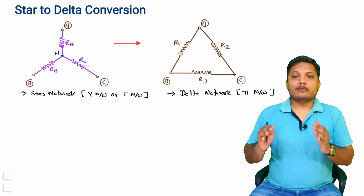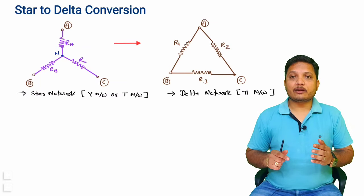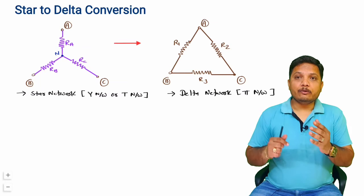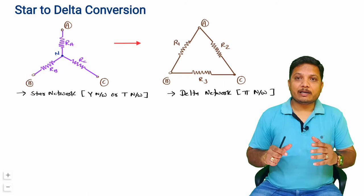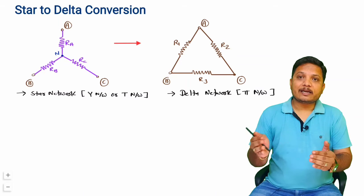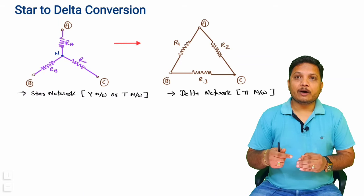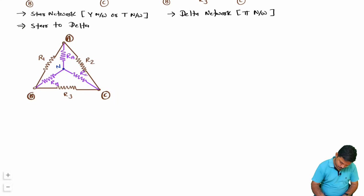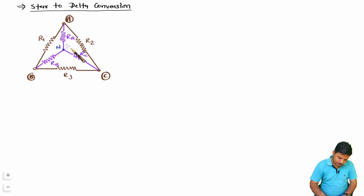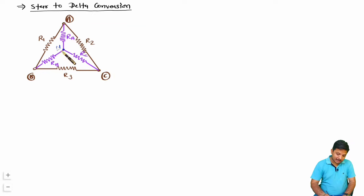Now let us understand how to convert a star network into a delta network. To do this, I will merge the star network inside the delta network. We have a star network with resistors RA, RB, and RC, and we want to convert it into a delta network having resistances R1, R2, and R3.